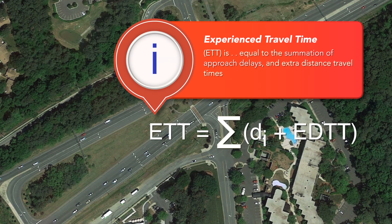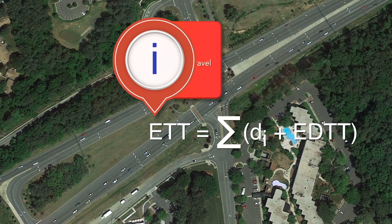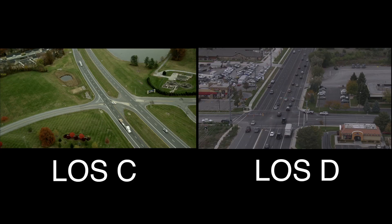Experience travel time is equal to the summation of approach delays and extra distance travel times. Facility-wide level of service is based on the average amount of experience travel time per vehicle. Thanks to the elimination of left turn phases, facility-wide level of service is often better for an RCUT intersection when compared to a conventional intersection.